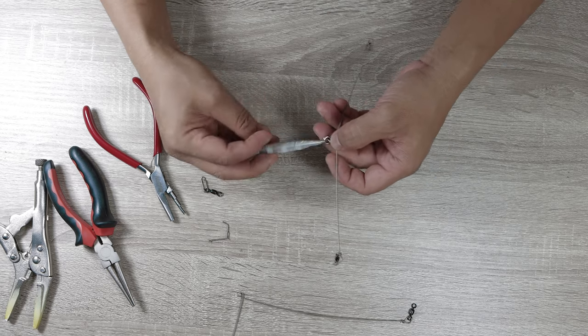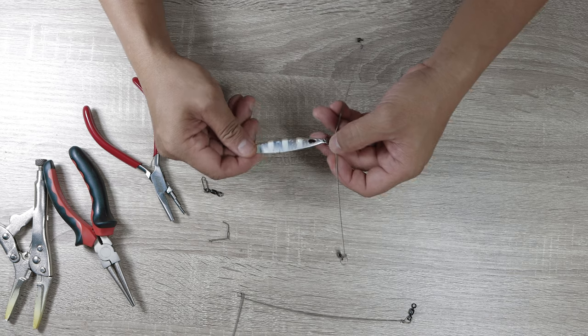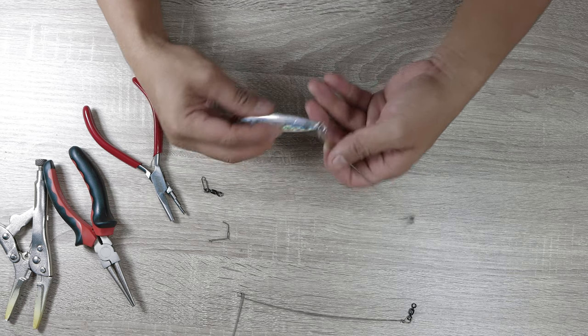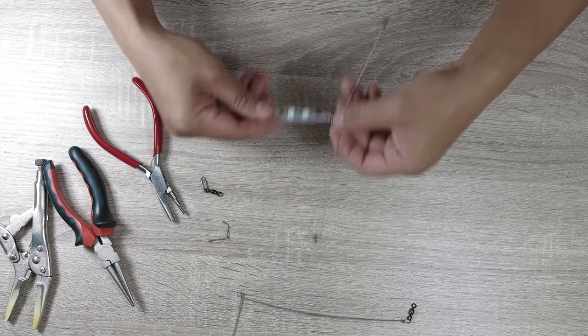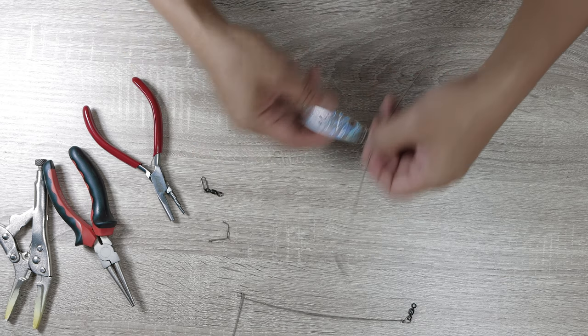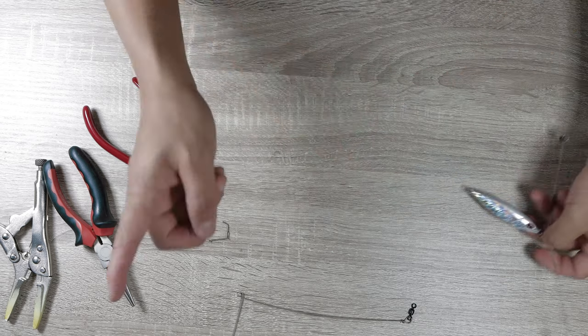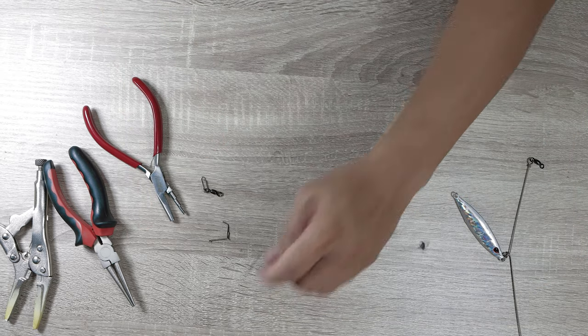If I put a swivel there it will just spin on its own, there's no restriction. But if I put this and it's fluttering down, it's actually moving the whole thing and actually moving my soft plastic.